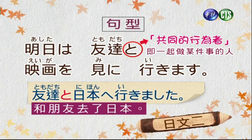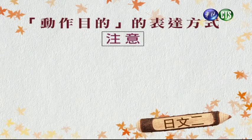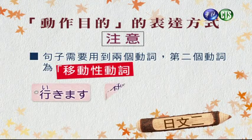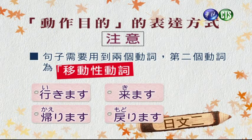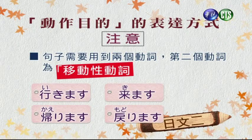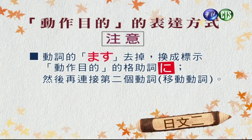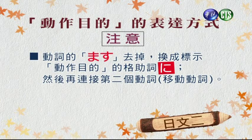這裡的と表示共識者的用法。接下來看動作目的的表達方式。句子裡面需要用到兩個動詞，第二個動詞必須是移動性的動詞，比如行きます、帰ります、戻ります。戻ります的意思是折回來、回到原點。必須把動詞的ます去掉，換成動作目的的格助詞に，然後在後面加上移動性動詞。